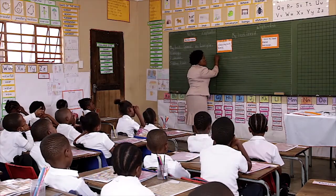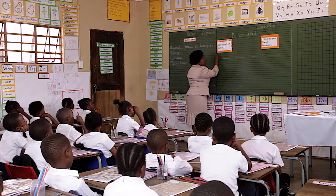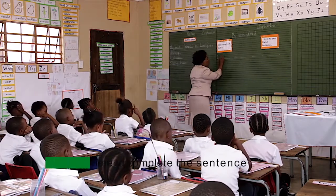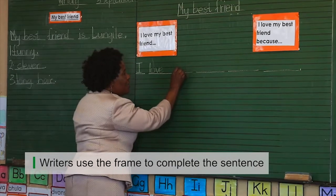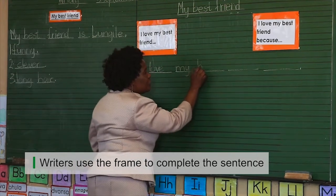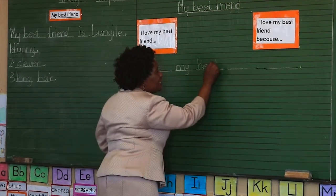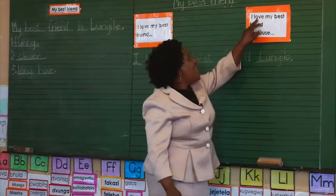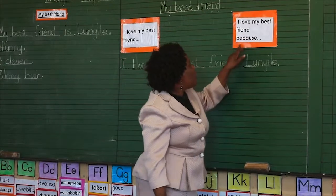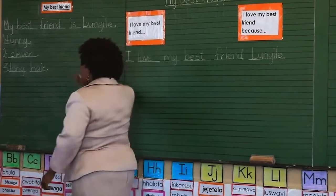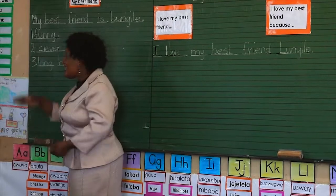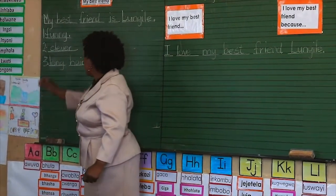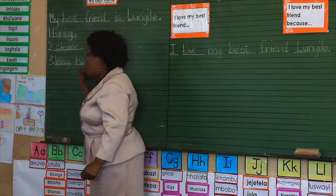We write I — we put a capital letter I at the beginning of a sentence. I love. The writers use the frame to complete the sentence. Best friend. I love my best friend because — do you remember what I wrote about yesterday? I said my friend Lungire is funny. She is clever. She has long hair.